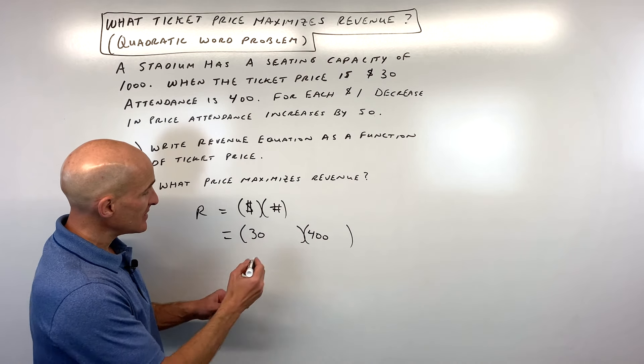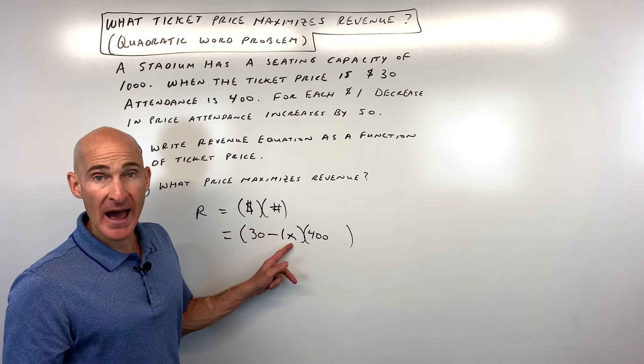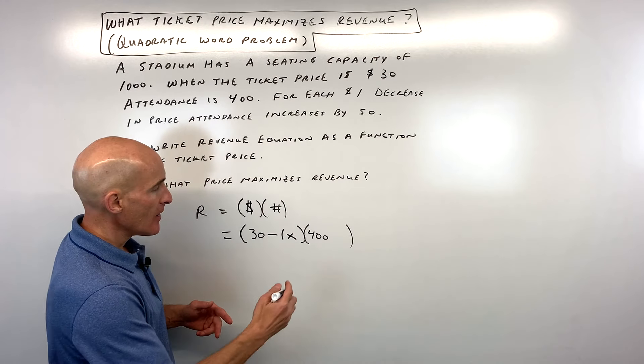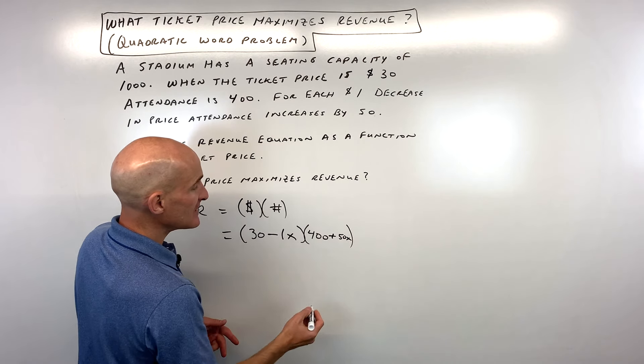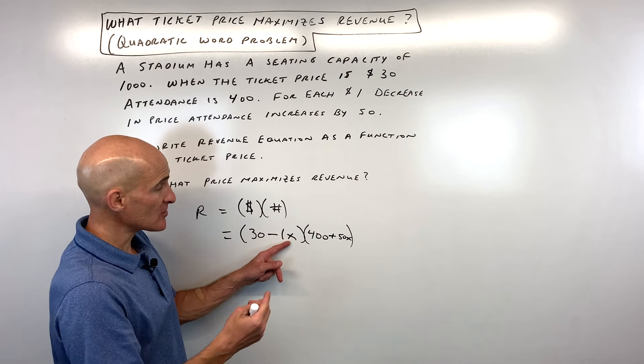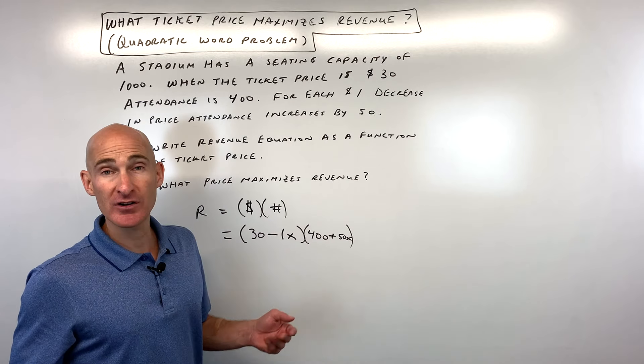But if you decrease the price by a dollar, and I'm going to write minus one x where x is the number of one dollar price decreases, the attendance is going to go up by 50 times x. See if you decrease two dollars then two times fifty is a hundred, it goes up by a hundred people, now there's five hundred people attending.